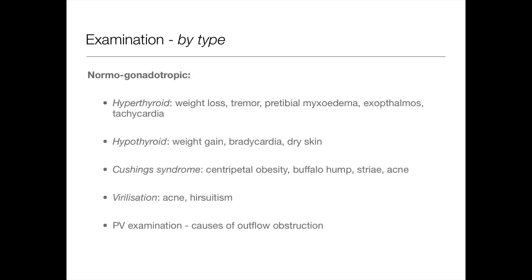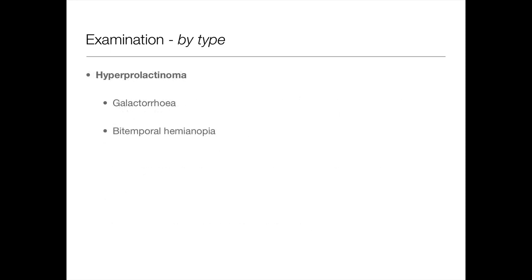For normogonadotrophic amenorrhea, look for signs of thyroid disease — in hyperthyroid: pretibial myxoedema, exophthalmos, tachycardia; in hypothyroid: bradycardia and dry skin. Look for Cushing's syndrome signs — steroid overuse, etc. Look for virilisation — acne and hirsutism. Also important to do a PV examination to look for causes of outflow tract obstruction. For hyperprolactinaemia, check for galactorrhoea, and do a cranial nerve examination particularly looking for bitemporal hemianopia due to pressure of the pituitary tumour on the optic chiasm.